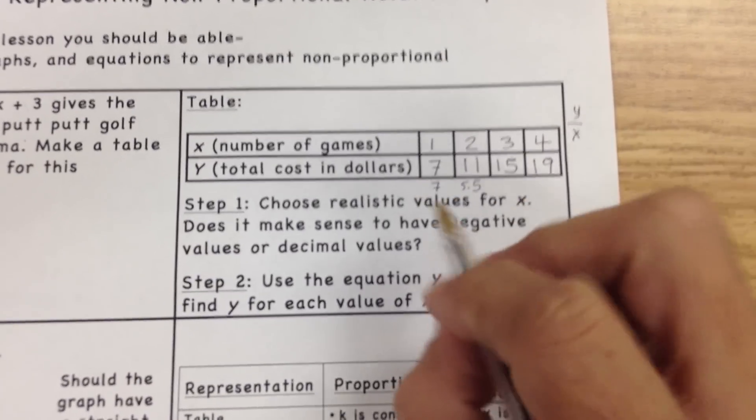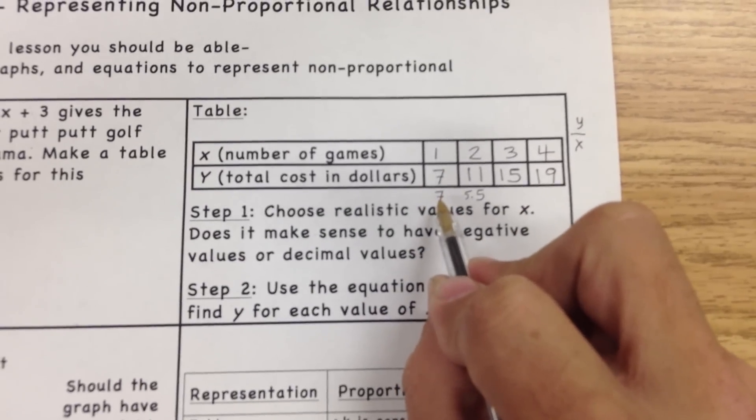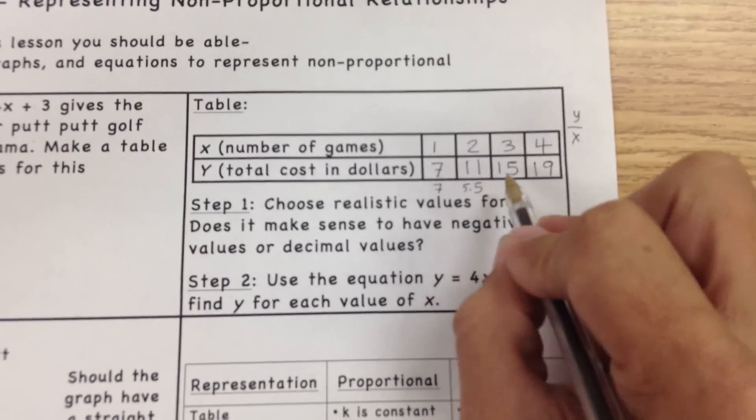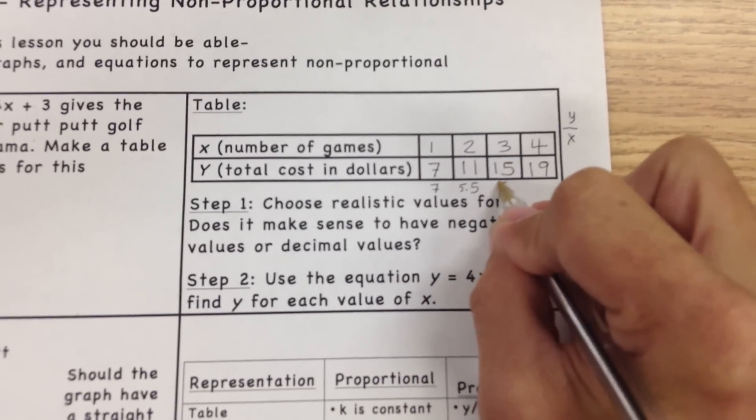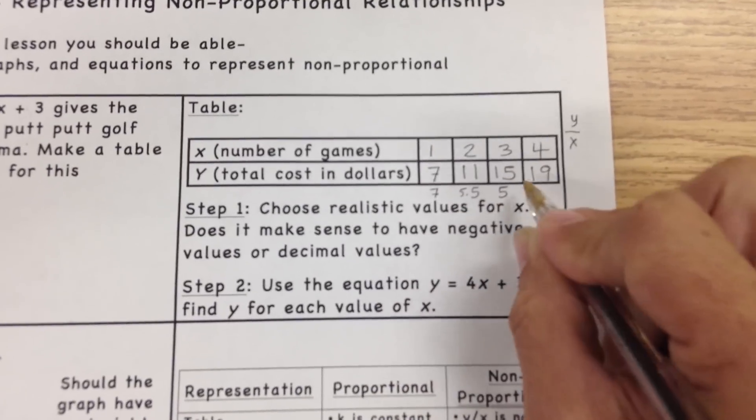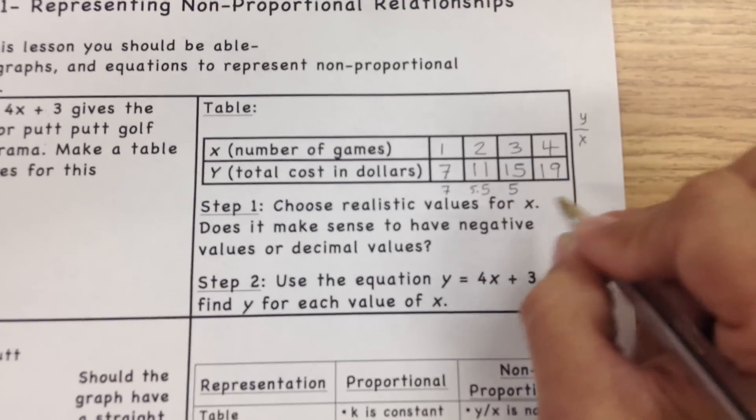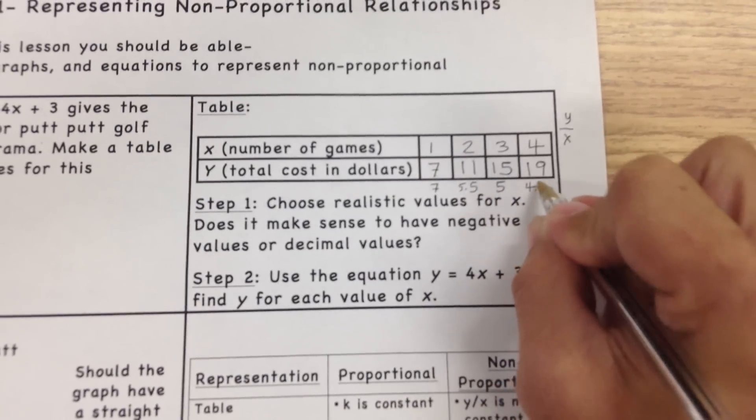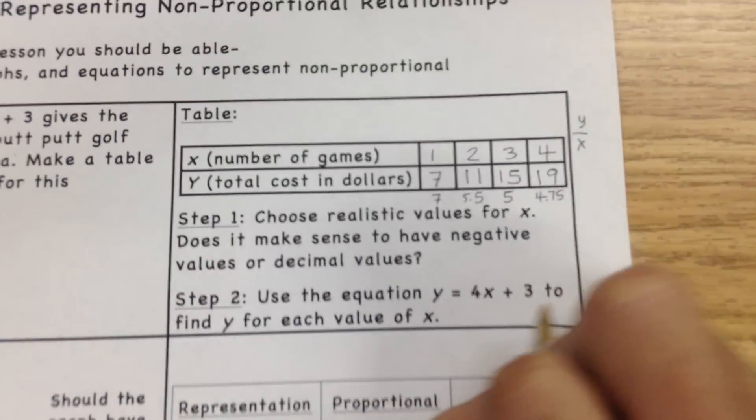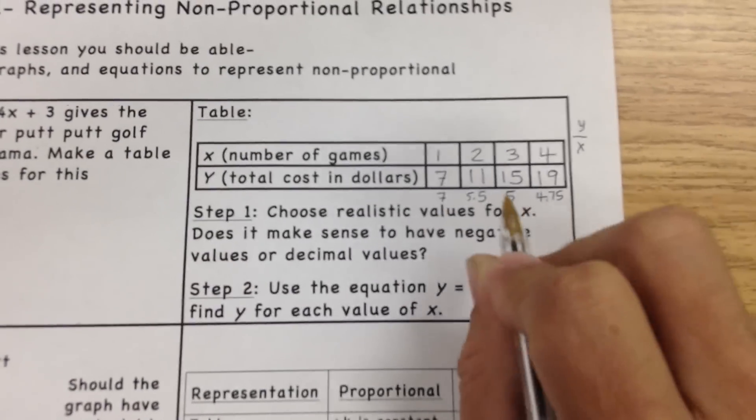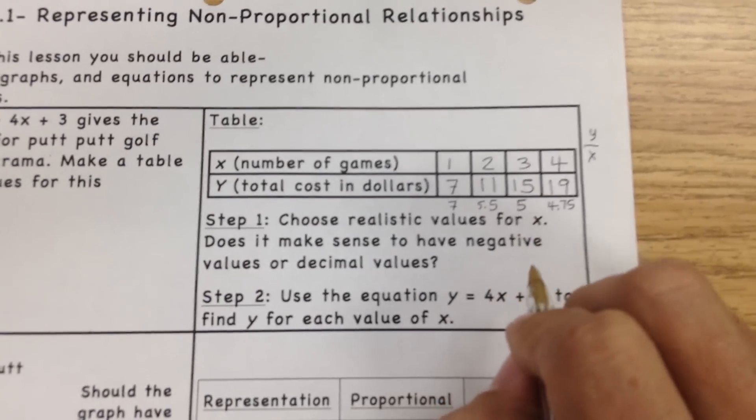It's kind of like finding the average cost. The average cost for one game is $7, but by the time you get down here to 3 games, if you do this problem, 15 divided by 3, you see the average cost has changed to 5, and that would just keep happening. This would be 4.75. So since this keeps changing, this is a non-proportional situation.